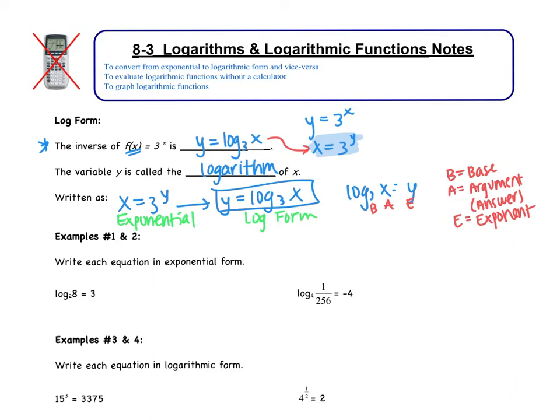That acronym BAE should help us transfer from log form to exponential form. So what we take then, or what we do, the base is 3, our exponent is y, and our argument, or our answer, is x. So that's transferring from log form to exponential form, which, if you can see, is exactly what we had to begin with. So that's the first thing we ought to be able to do today, is transfer between those two forms. So we're going to do a little bit of practice with that, and then see where that gets us.